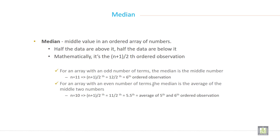For an array with an odd number of terms, the median is the middle number. Like for example if you have 11 numbers in your data set, n is equal to 11. Then calculate (n+1)/2. So (11+1)/2, so the sixth order observation will be your median.